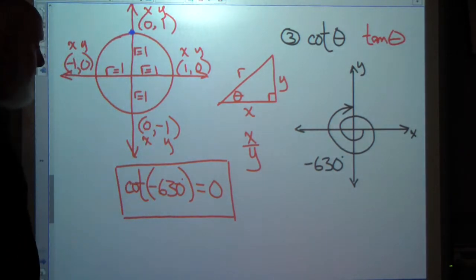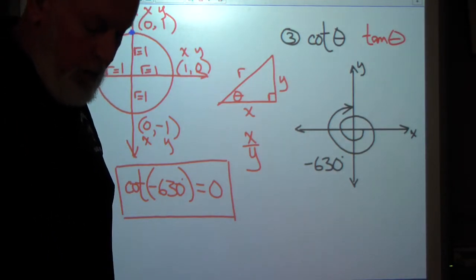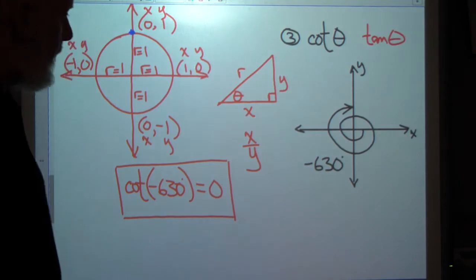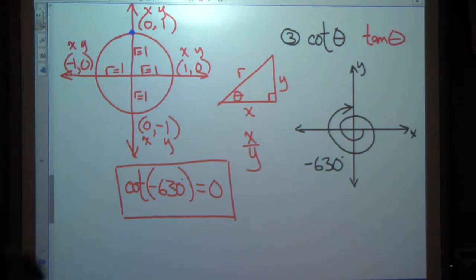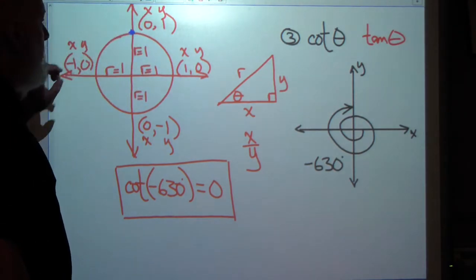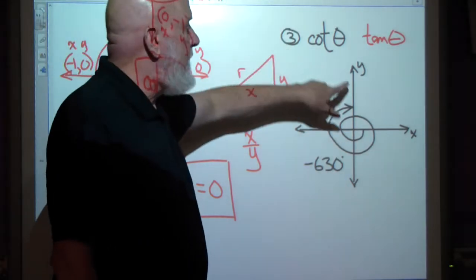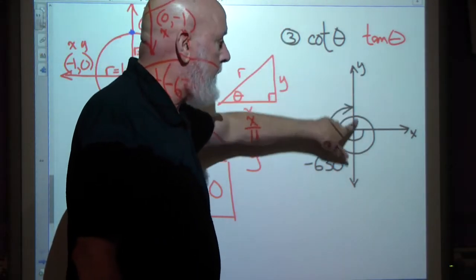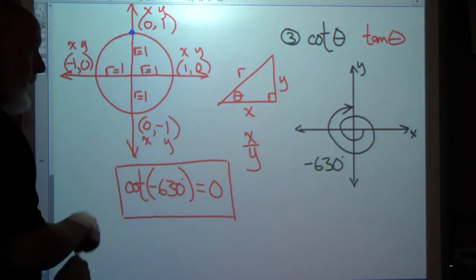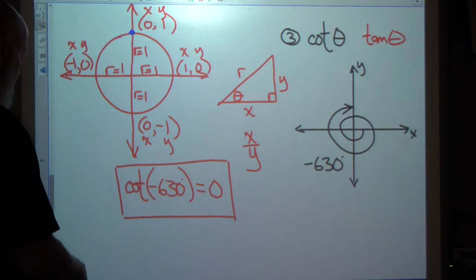We used the unit circle because we stopped on the axis — we didn't have a reference angle in the usual sense because it was a quadrantal angle. That's when we use the unit circle.